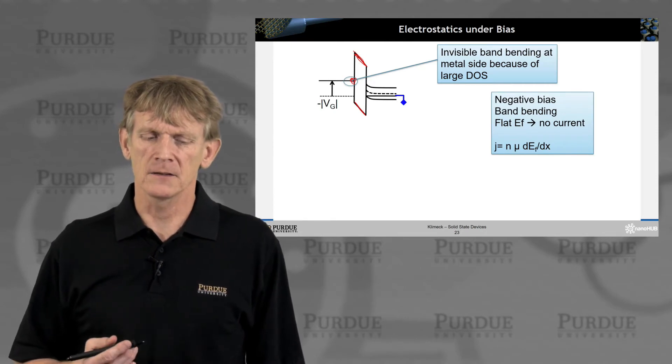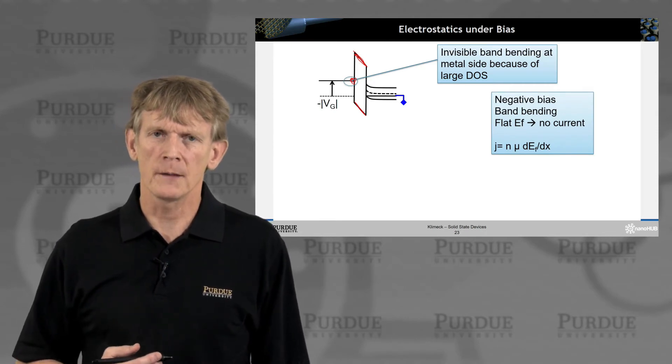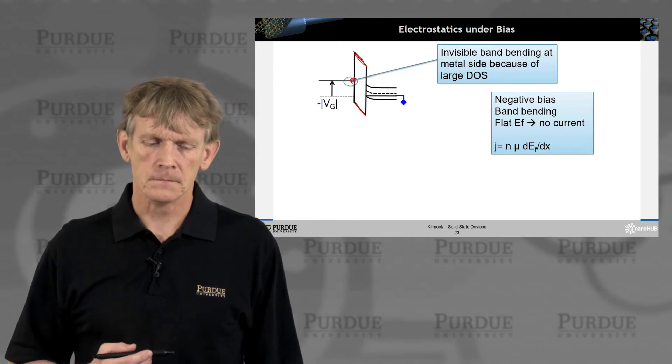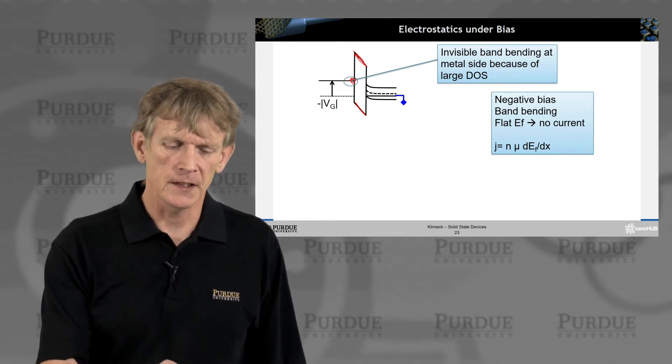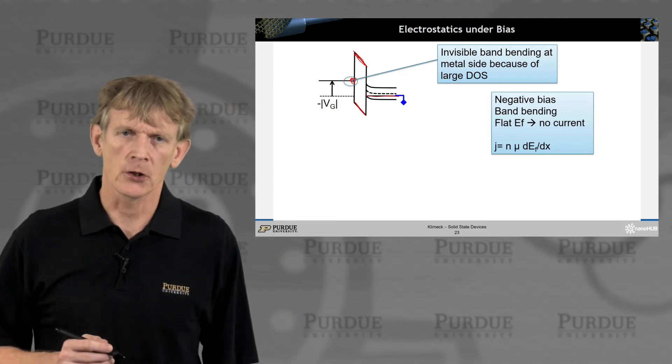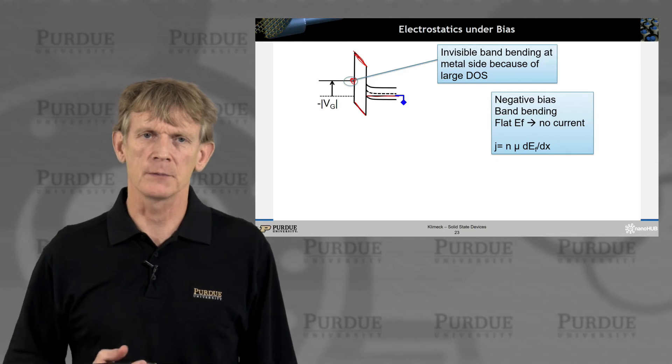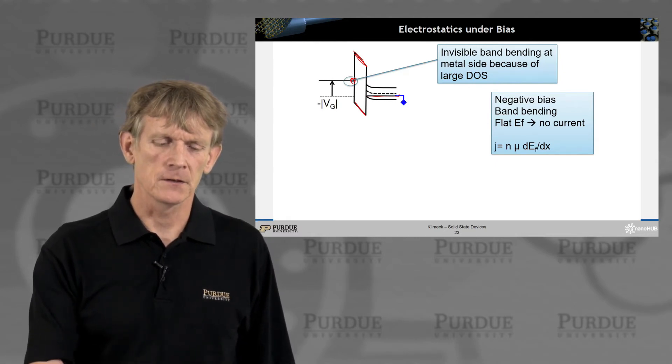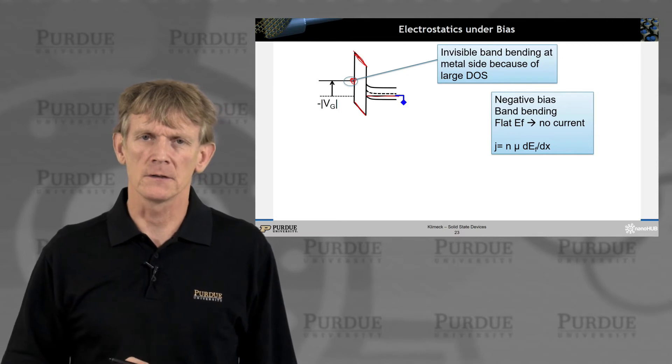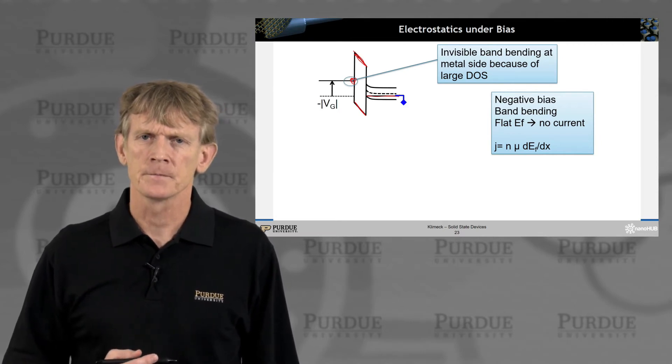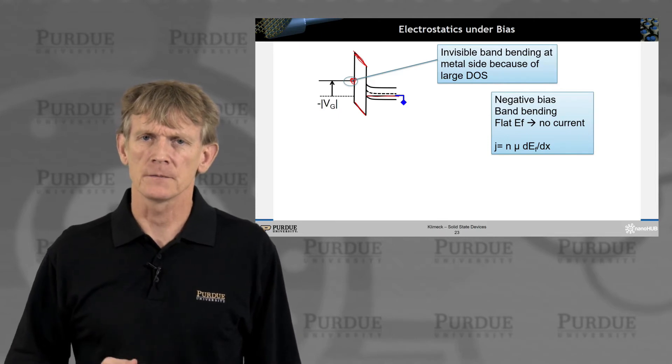If we apply a negative bias, we pull up the Fermi level on the left side here, and the Fermi level will stay flat in equilibrium here. Remember, we won't have current flows, so the Fermi level must be flat. But we have this structure grounded on the P side, we will have band bending. But there's no current.